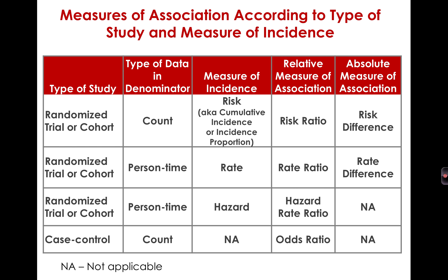For randomized trial or cohort studies with person-time denominators, you might end up with a hazard rate ratio as the measure of association. I won't be showing the calculation of that — it's more sophisticated than risk ratio or rate ratio — but it's important to have familiarity with the concept, because you will see many papers in the clinical literature that report a hazard rate ratio. Finally, for a case control study design, you cannot calculate those same measures, because the study design and its data are so different. Instead, for a case control study, we calculate an odds ratio.